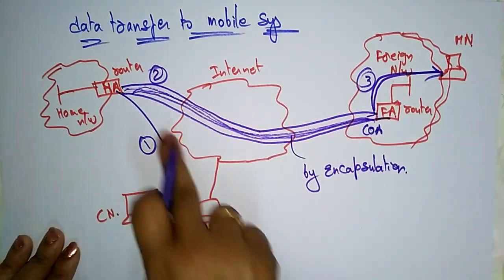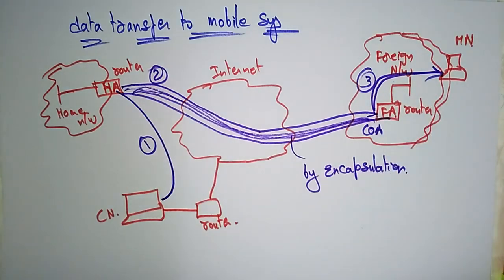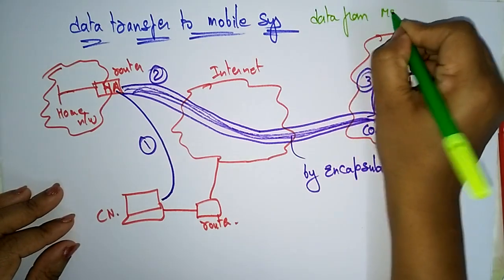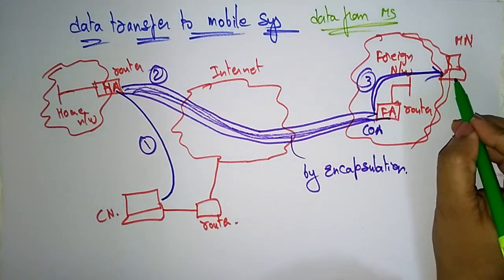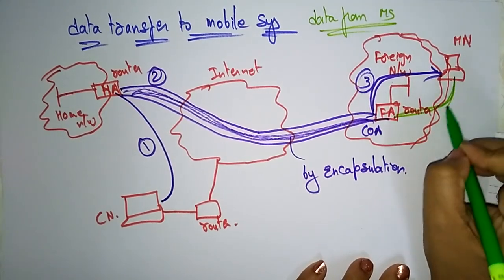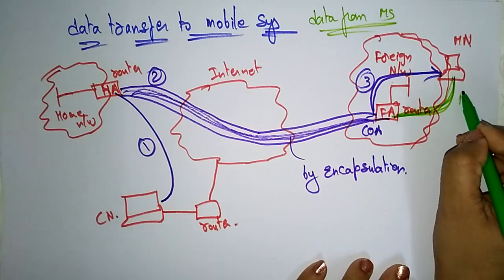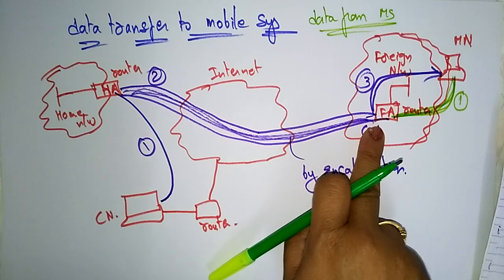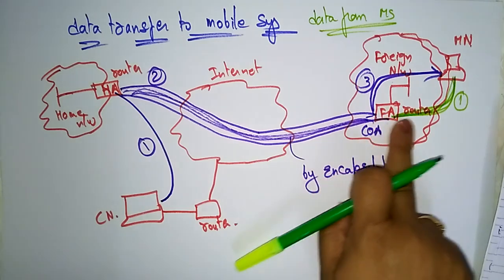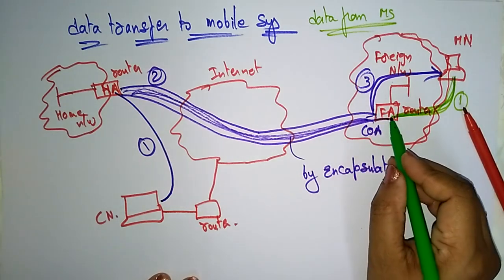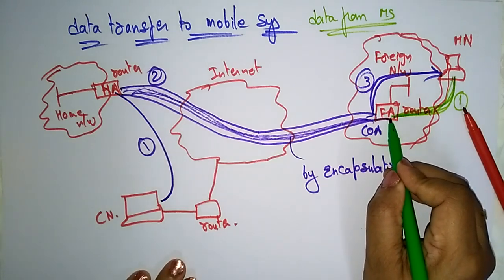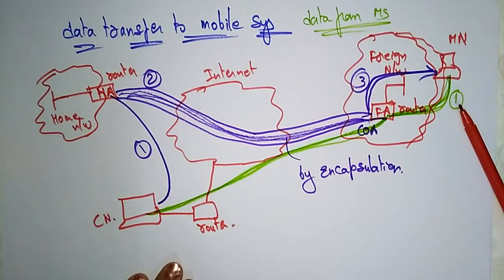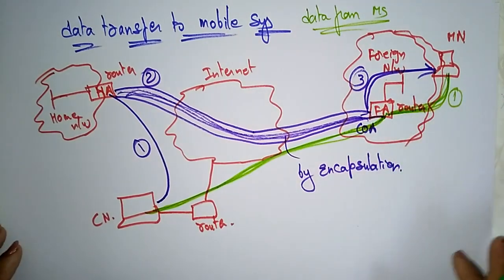In the same way, data transfers from the mobile system. The mobile node sends the information to the foreign agent. The sender sends to the IP address of the receiver as usual, to the foreign agent, and the foreign agent works as a default router. From there it sends to the correspondent node. This is data from the mobile system. Thank you.